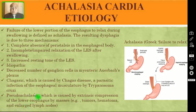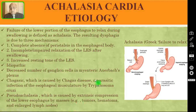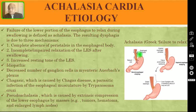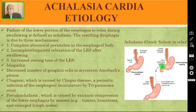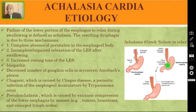There is also pseudo-achalasia, caused by extrinsic compression of the lower esophagus by masses like tumors, hematoma, or enlarged lymph nodes. In a normal esophagus, there is normal esophageal peristalsis. During swallowing, there will be relaxation of the lower esophageal sphincter and food easily goes into the stomach. In achalasia cardia, there is impaired esophageal peristalsis and failure of the lower esophageal sphincter to open during swallowing — it remains very tight. So food cannot pass from the esophagus into the stomach, and there will be a functional obstruction at this level.